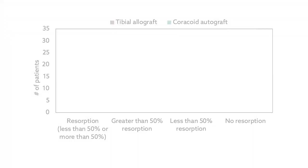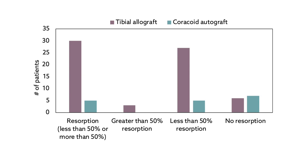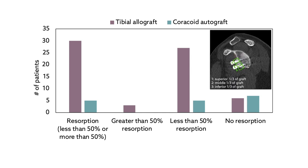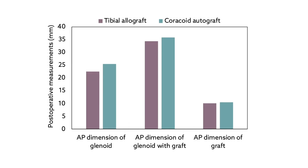The other main difference between the two graft types was related to bone resorption. The tibial allografts showed significantly higher rates of resorption than the coracoid autografts. Despite the higher resorption in the allograft patients, the final graft size for both groups was equal. It's possible the allografts showed greater resorption because the initial graft size was larger than that of the autografts.